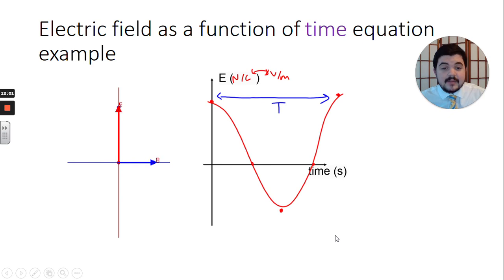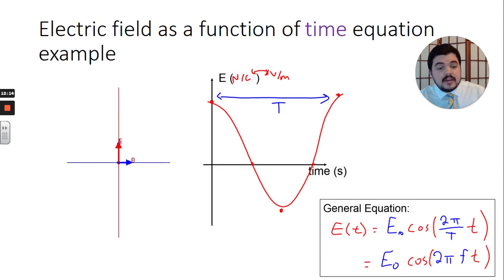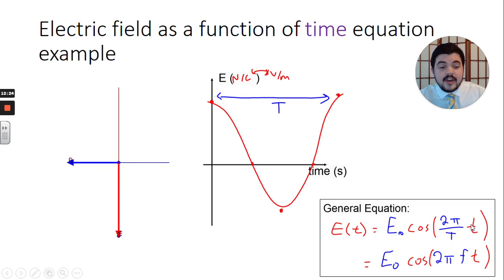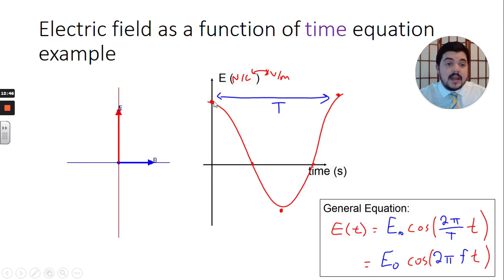The equation describing the electric field as a function of time might look like: E(t) = E₀ × cos(2π/T × t), where capital T is the time period and lowercase t is an arbitrary time. Since frequency and period are inverses, you can also write this as E₀ × cos(2πf × t). I used cosine for this graph because it started at the amplitude — not at the origin — and it started at the positive amplitude, so it's a positive cosine.